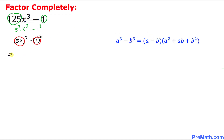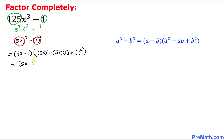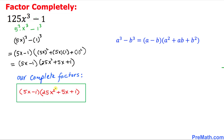So we are going to factor this out. That becomes (5x - 1) times a² which is (5x)², plus 5x times 1, and then plus 1². Let's simplify: that gives us (5x - 1)(25x² + 5x + 1), and these are our complete factors and our answer.